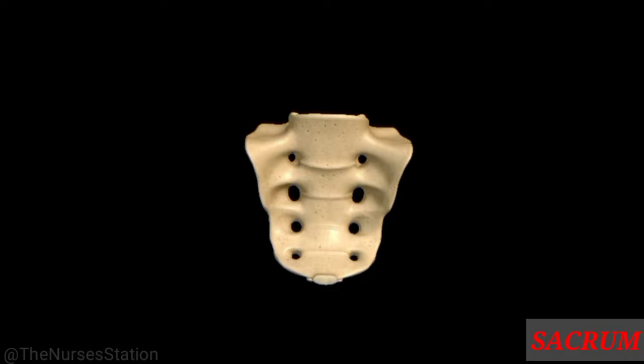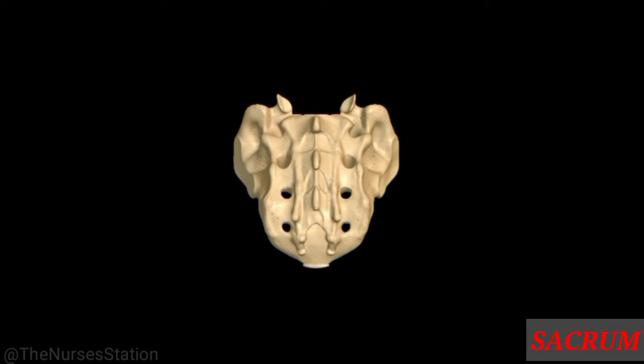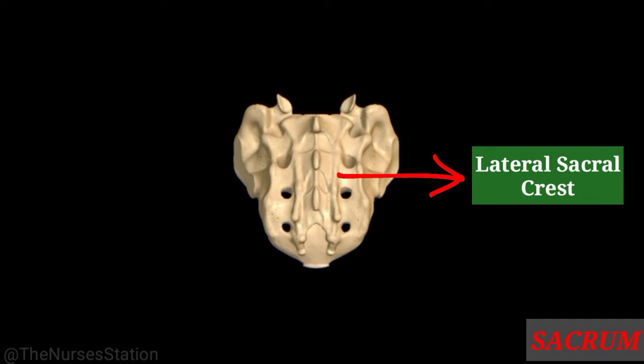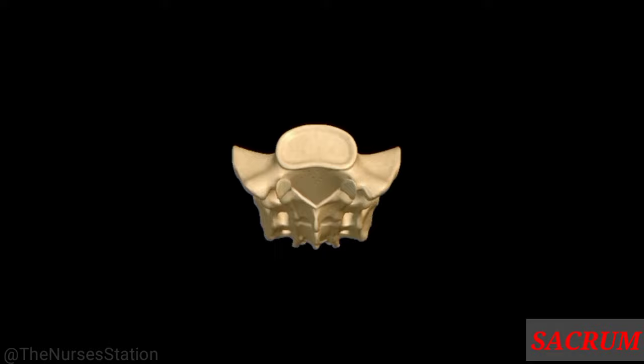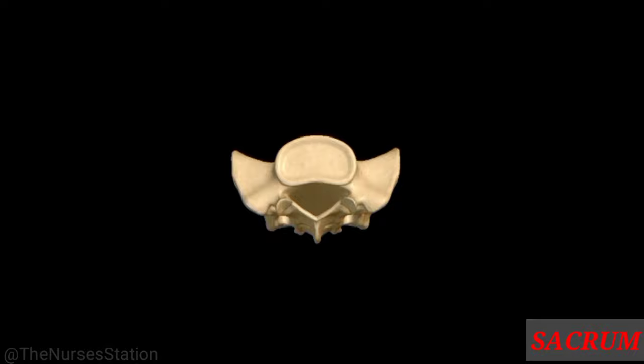At the ends of these lines are four pairs of anterior sacral foramina. The convex posterior surface contains a median sacral crest formed by the fusion of spinous processes of upper sacral vertebrae, a lateral sacral crest formed by the fusion of transverse processes, and four pairs of posterior sacral foramina. These foramina connect with the anterior sacral foramina to allow passage of nerves and blood vessels. The sacral canal is a continuation of the vertebral canal.